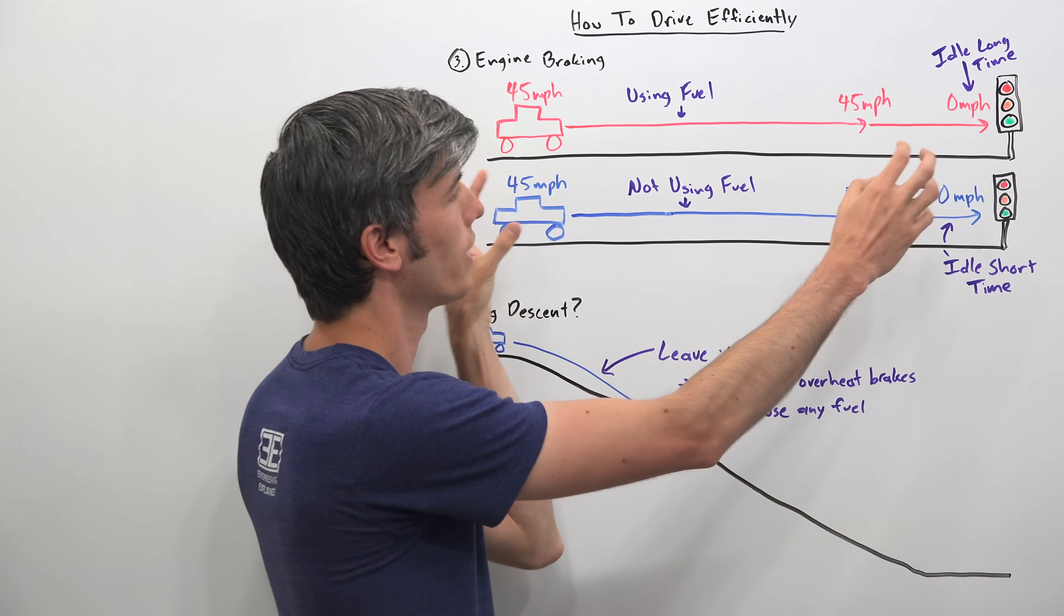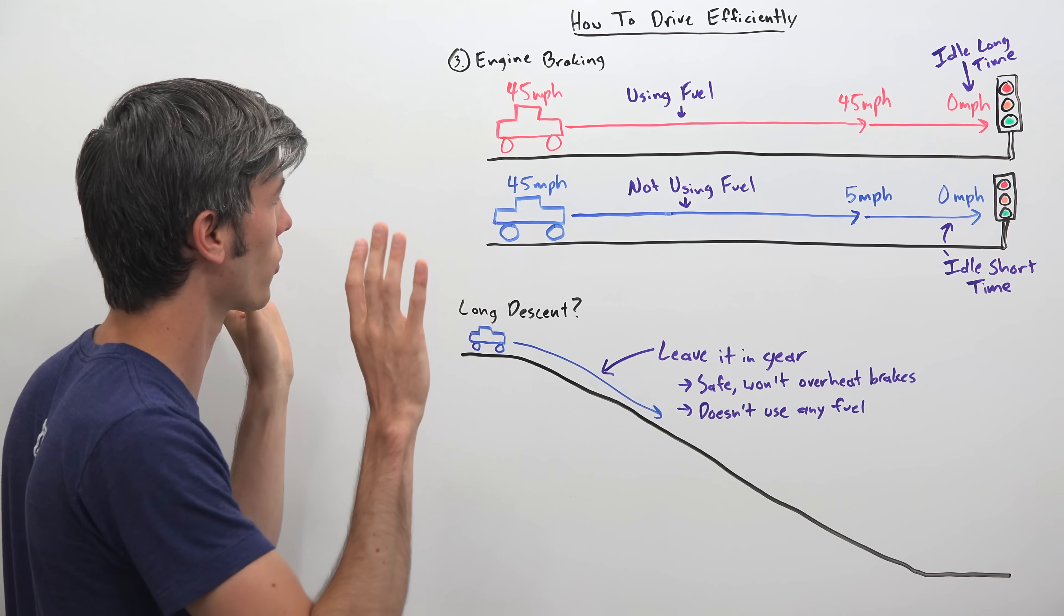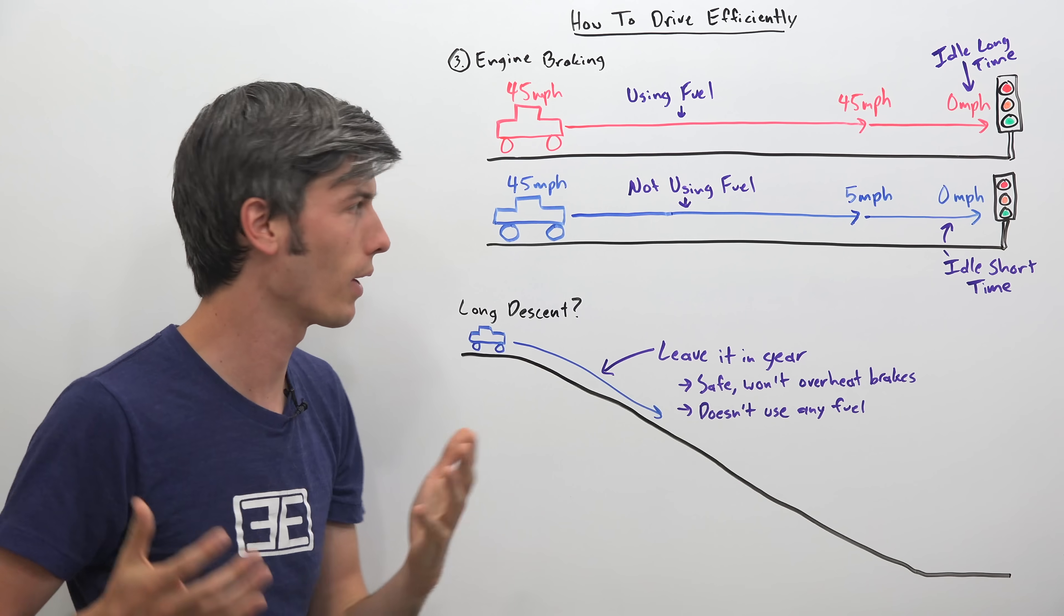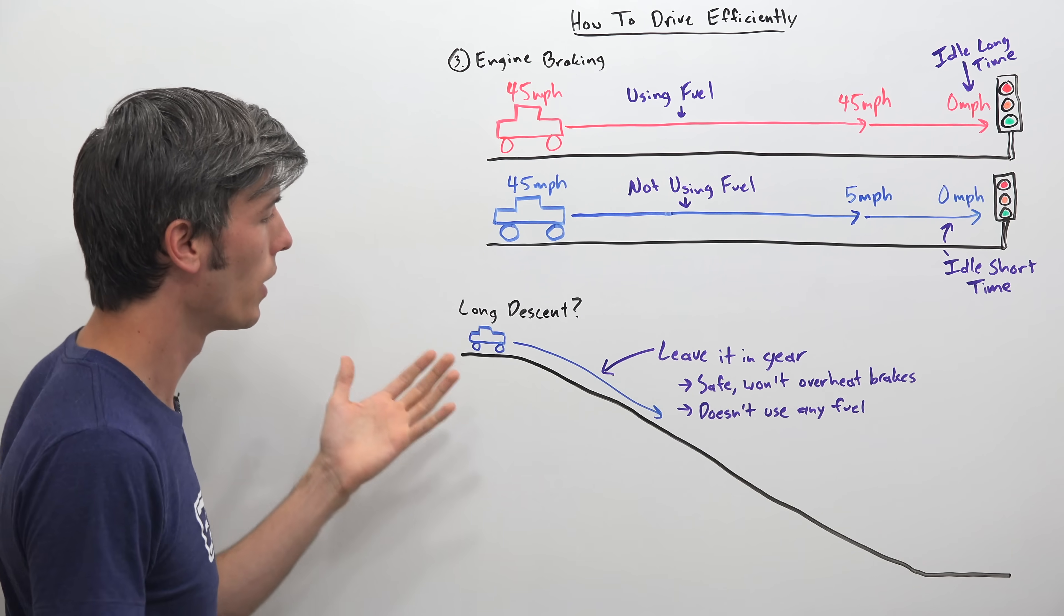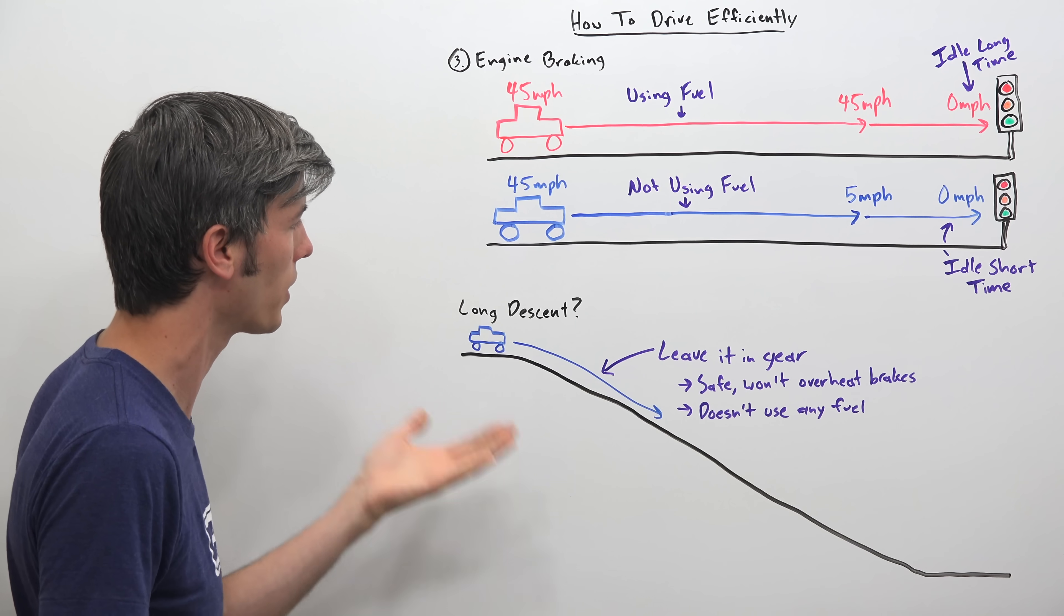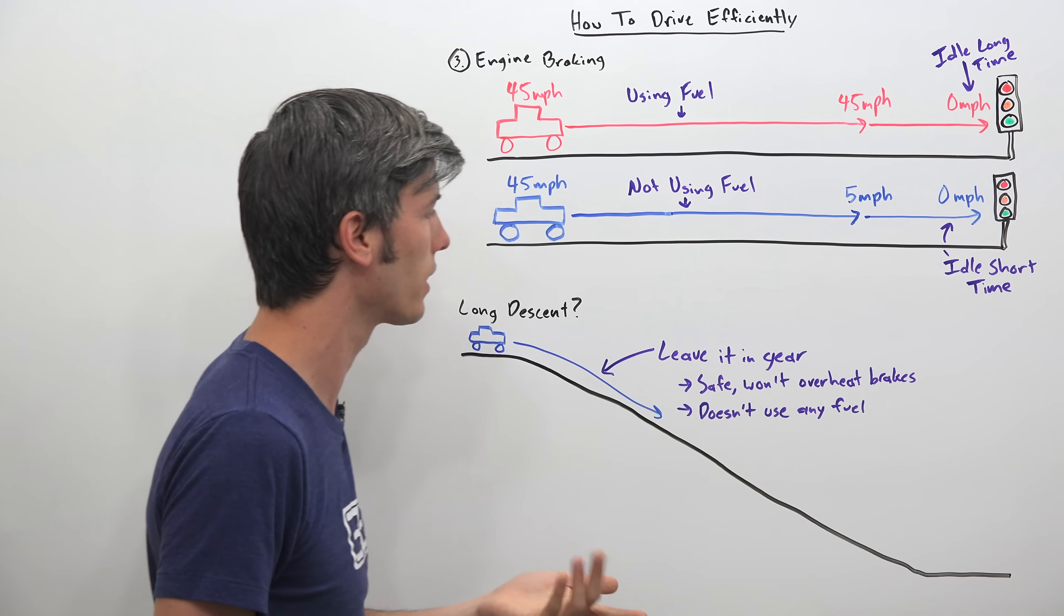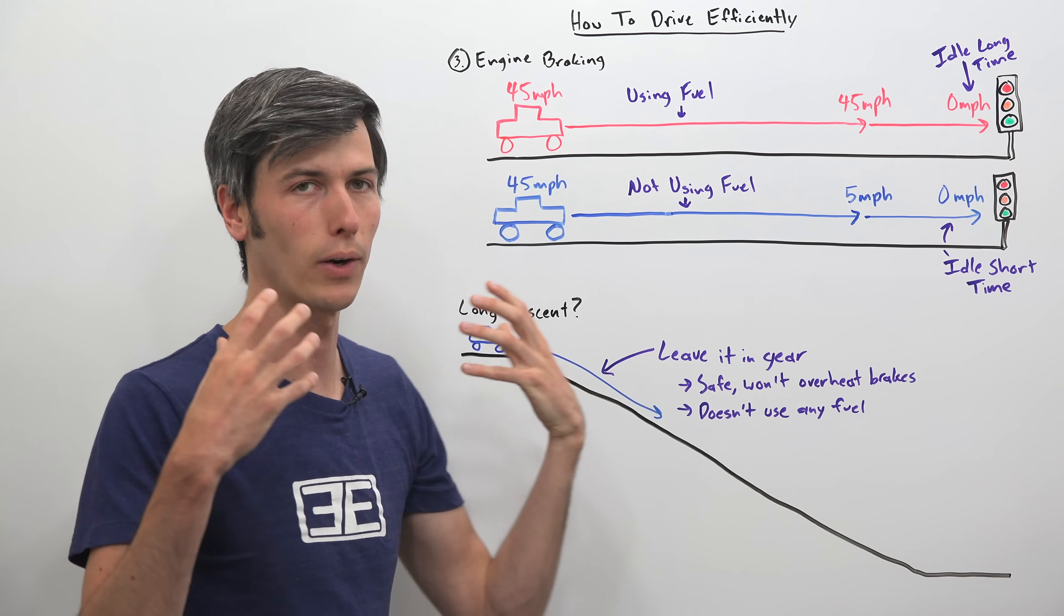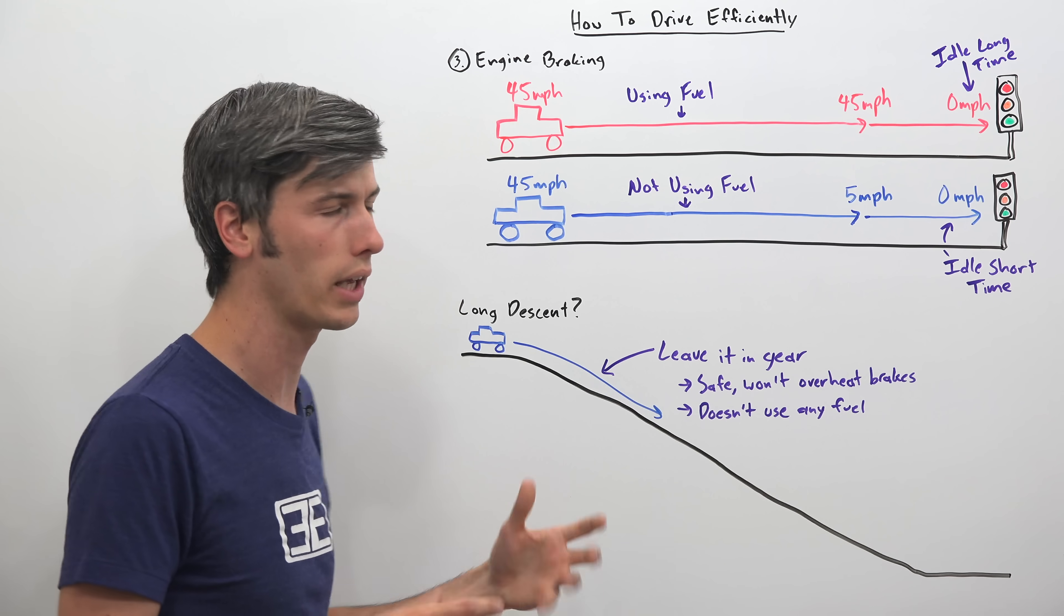So overall, a way better technique to approach a stoplight is to just let off the gas immediately as you start going towards it. Don't maintain your speed to a red light. Another scenario, if you have a long descent coming up. So if you're going to be driving downhill for quite some time. Well, if you just simply leave it in gear. Not only is this safe because it's putting the heat from decelerating into your engine's cooling system. Which is far more capable. It can take a ton of heat versus putting it into the brakes. So you won't overheat your brakes.